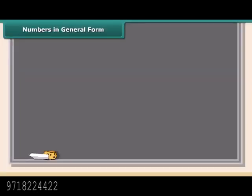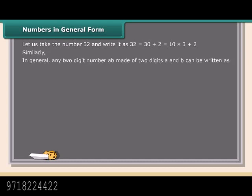Numbers in general form. Let us take the number 32 and write it as: 32 = 30 + 2 = 10×3 + 2. In general, any two-digit number AB made of digits A and B can be written as AB = 10×A + B, and BA = 10×B + A.